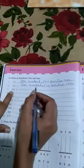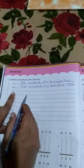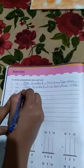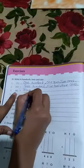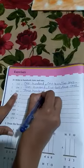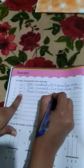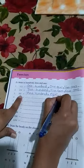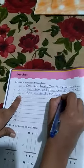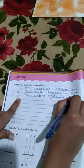Isi tarah next hai. Pahle hum hundreds me likhenge, phir tens me, phir ones me. 3 hundreds, 8 tens, 2 ones.